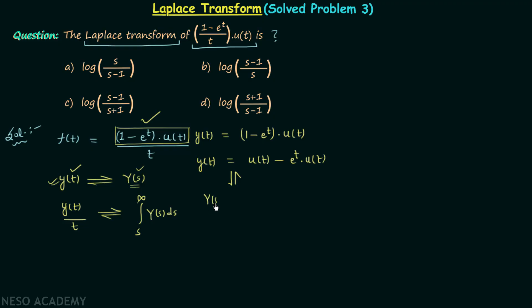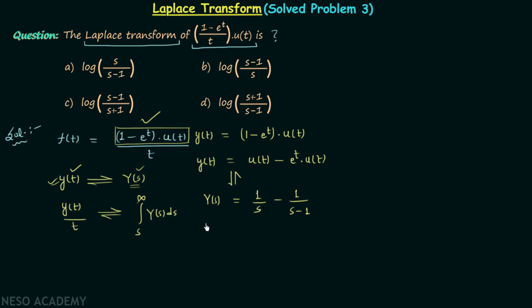We have Y(s) on the left-hand side, and on the right-hand side we have 1/s minus 1/(s-1). We have 1/s because it is the Laplace transform of u(t), and 1/(s-1) because it is the Laplace transform of e^t multiplied by u(t). The negative sign is present because of the linearity property — subtraction in time domain corresponds to subtraction in frequency domain.